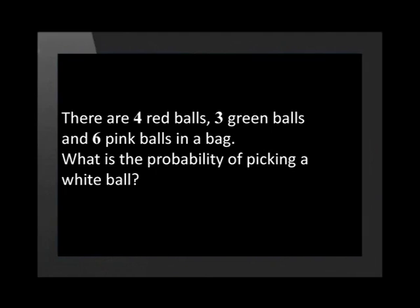Let us look at another example where the probability is impossible. There are 4 red balls, 3 green balls, and 6 pink balls in a bag. What is the probability of picking a white ball? There is no white ball in the bag. Therefore, the probability of picking a white ball is 0.